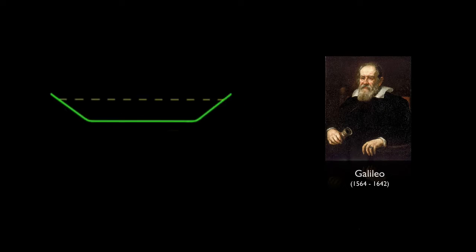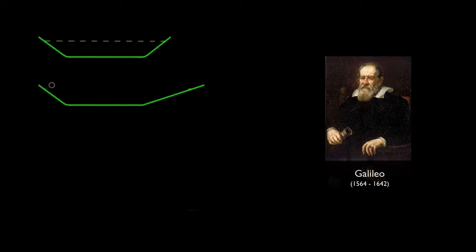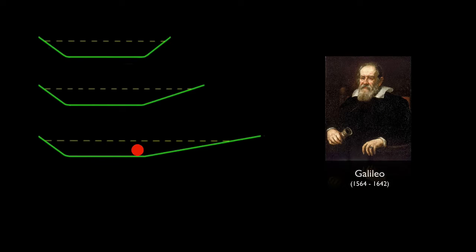If the upward ramp were less steep, he found the ball wouldn't slow down as quickly, which meant it could travel for a longer time. It would then end up at the same height at which it was released.